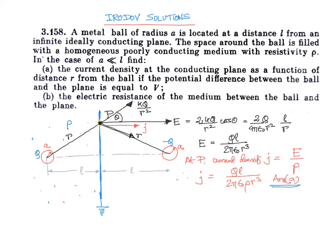For part B, we need to find the electrical resistance of the medium between the ball and the plane. Let V_A be the potential of ball A. The potential of ball A is kq/a, and since a is much much smaller than l, we can approximate it as q/(4πε₀a), neglecting the contribution from the image charge.